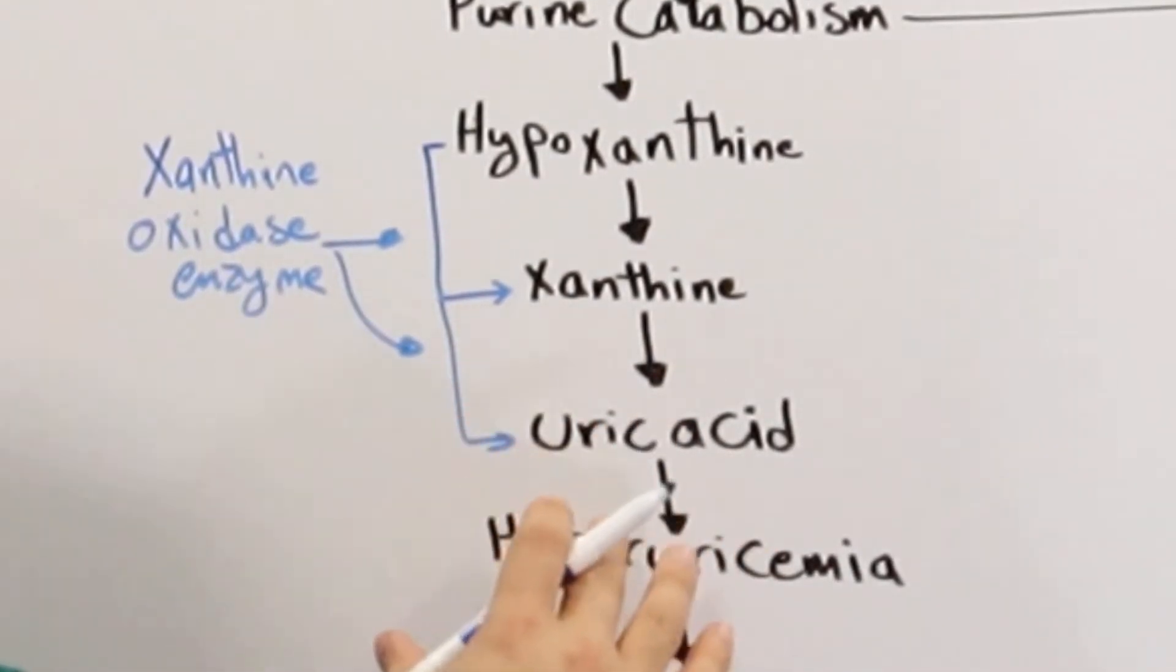What ends up happening is that due to the overproduction of uric acid, we end up having a condition called hyperuricemia, which is basically a high amount of uric acid in the blood.